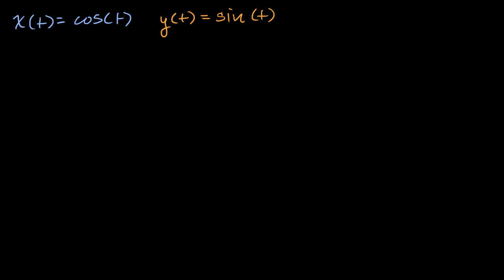And we want to find the arc length of the curve traced out. So length of curve from t is equal to zero to t is equal to pi over two.